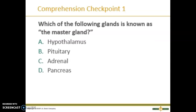Comprehension checkpoint one: which of the following glands is known as the master gland? You should have selected B, the pituitary gland. Great job.